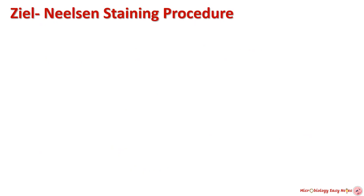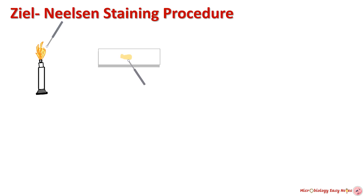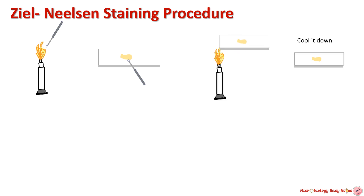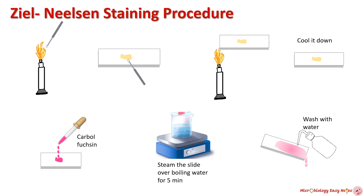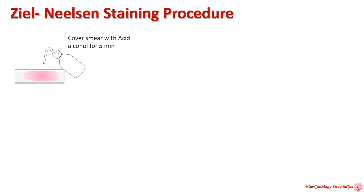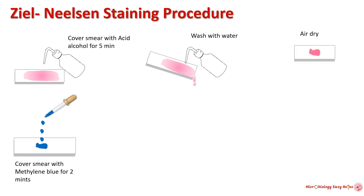Ziehl-Neelsen acid fast staining procedure: first, prepare a bacterial smear on a clean and grease-free slide using a sterile inoculating loop, then heat fix the slide and cool it down. Cover the smear with carbol fuchsin stain, then steam heat the stain until vapor just begins to rise — do not overheat. Allow the heated stain to remain on the slide for five minutes, then wash off the stain with clean water. After that, cover the smear with acid alcohol for five minutes or until the smear is sufficiently decolorized.